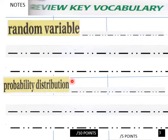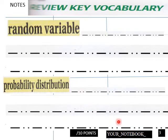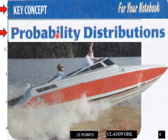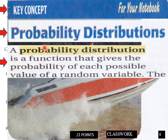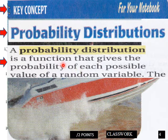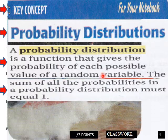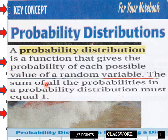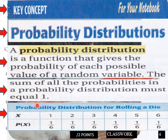Key concepts: A probability distribution is a function that gives the probability of each possible value of a random variable. The sum of all the probabilities in the probability distribution must be equal to one. And here is an example of a probability distribution for rolling a die.